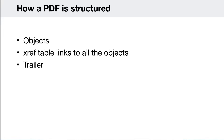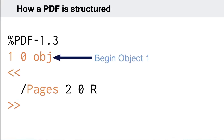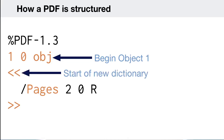So how is a PDF structured? We have objects, the xref table, and the trailer. Objects allow you to define images and text streams. The xref table points to each of those objects in the document, and the trailer is at the end of the document and specifies the root object. Here's what an object looks like in PDF code — this is the first object, revision zero, with the start keyword.